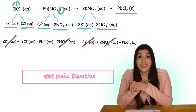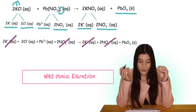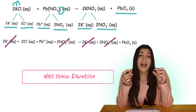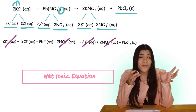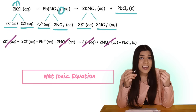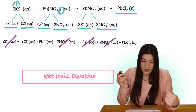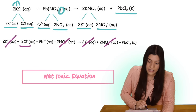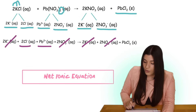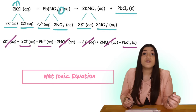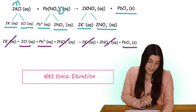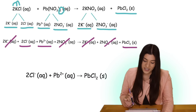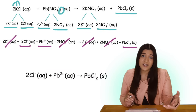For the net ionic equation, you always have the ions that are needed to form your solid as the reactants. We needed two chlorines and we needed lead to form our final solid product. So those two must be added together to give you your net ionic equation, and that would be our final answer.